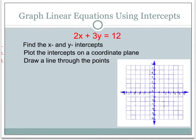So now we want to look at how we would graph a linear equation using the intercepts. We're going to start with the same equation: 2x plus 3y equals 12. We know it's a linear equation written in standard form. Previously we've graphed standard form using a t-chart, plugging in values for x and solving for y. This time we're going to use the intercepts. The first step is to find the x and y intercepts, which we already did: the x-intercept was 6, 0 and the y-intercept was 0, 4.